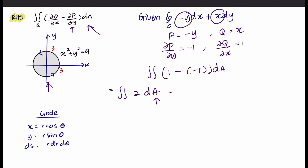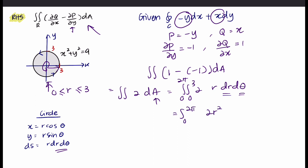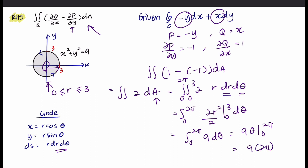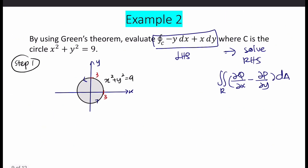For the area here, you must use polar coordinates since we have a circle. So dA = r dr dθ. Determine the limits: r is from 0 to 3, and θ is from 0 to 2π. Solve the integration. For the double integral on the right-hand side, we get 18π. So instead of calculating the line integral directly for this circle, you can solve it using the double integral.